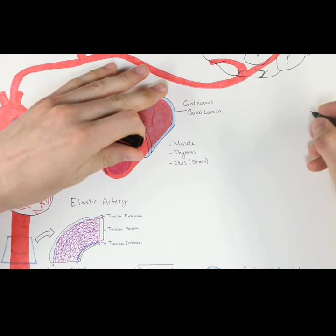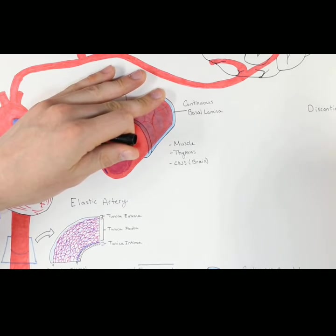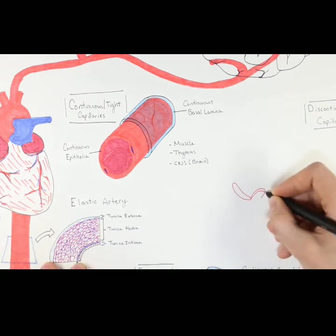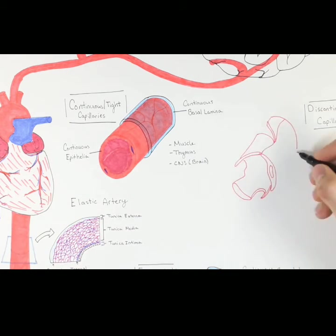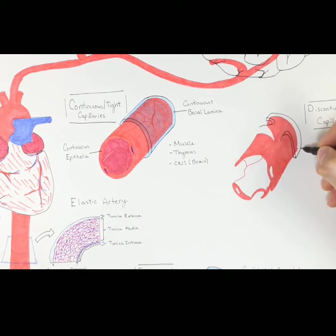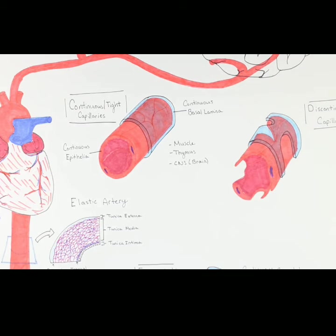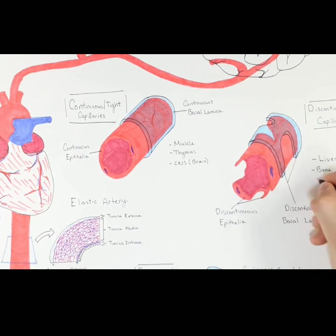Lastly, we are going to cover discontinuous capillaries. These capillaries also have a fenestrated epithelium, as shown here, and they do not contain diaphragms. The basal lamina is also very incomplete, as shown here. Discontinuous capillaries are found where free exchange of substances are needed, for example, in the liver, the bone marrow, and the spleen.